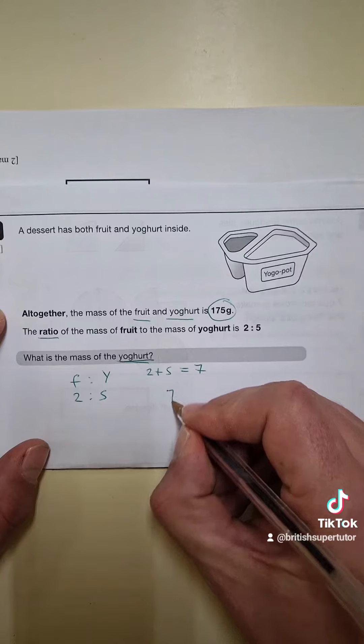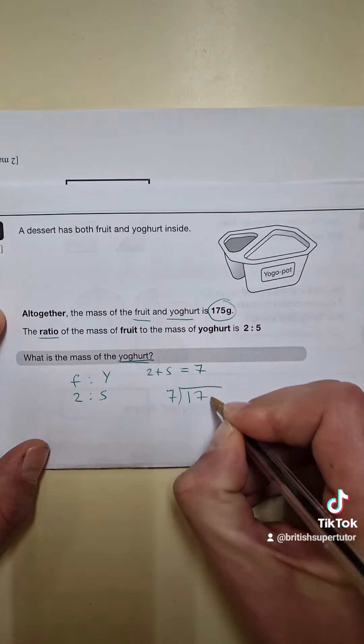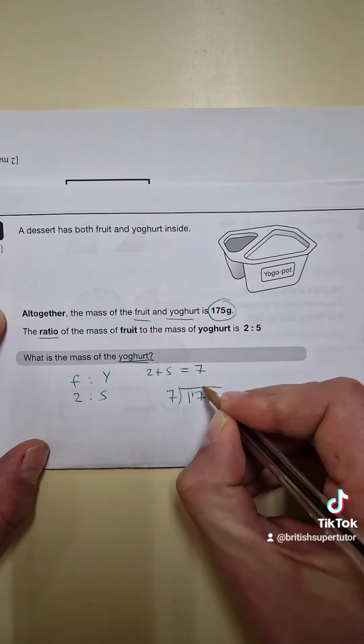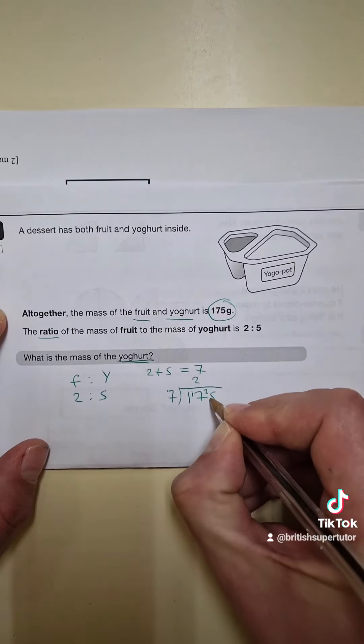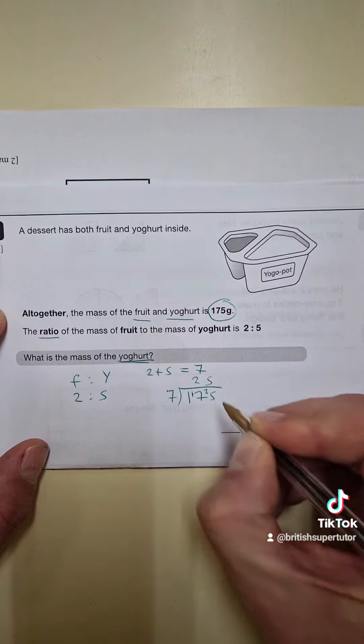Let's do 7s into 175. 7s into 1 don't go, 7s into 17 go twice, remain the 3. 7s into 35 go 5 times.